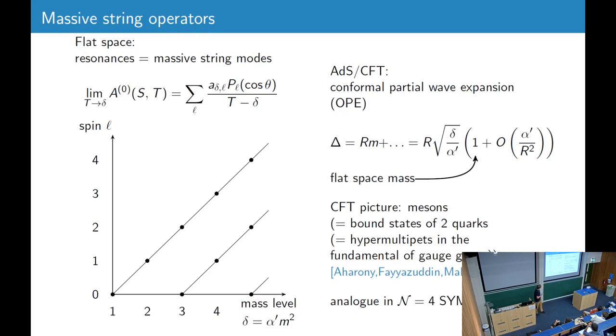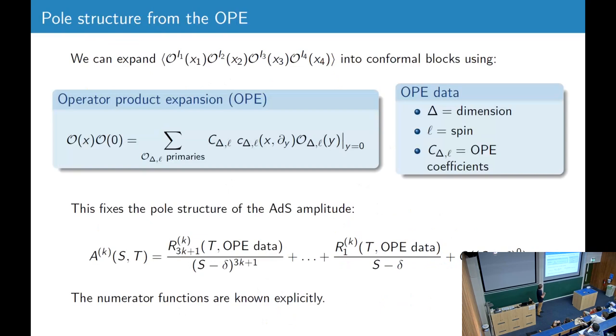So because the dimensions depend on the 't Hooft coupling, these have to be in long superconformal multiplets. And the CFT picture is that these are mesons, which means they're bound states of two quarks, where quarks are hypermultiplets in the fundamental of the gauge group. And the analog of these operators in N equals 4 would be Konishi and all these infinite number of long single particle multiplets.